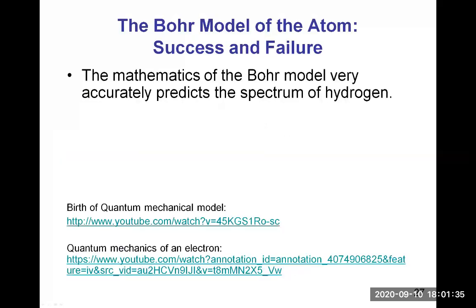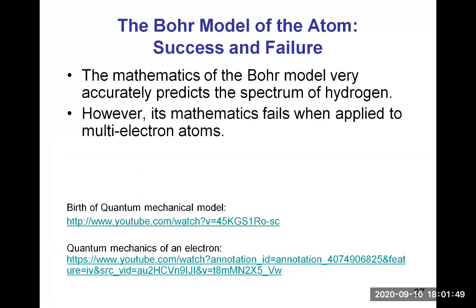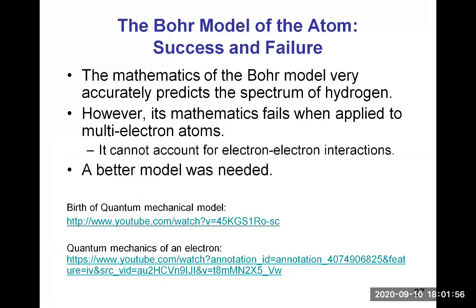The Bohr model of the atom is a success, but only a partial success, because the mathematics of the Bohr model very accurately predicts the spectrum of hydrogen, but it only works for hydrogen. Its mathematics fails when applied to multi-electron atoms. It cannot account for electron-electron interactions. A better model was needed and scientists developed the quantum mechanical model.